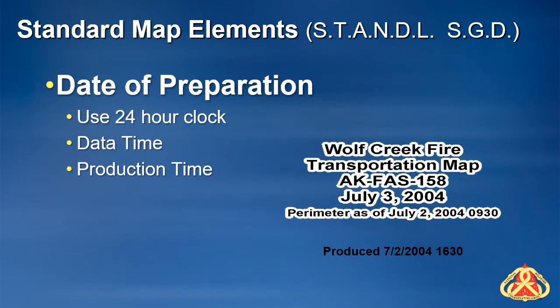The date of preparation should be near the author's name on the map. Software tools allow for the automatic insertion of this element onto the map with minimal effort. The production time is what date and shift the map is being made for — on the night of August 27th you are making the map for August 28th morning shift 0800. The data time is the time you processed the data, such as August 27th at 1600 when you created the fire perimeter. There may be more than one data time on one map, such as a fire line time and an IR data time. Time will always be on the 24-hour clock.